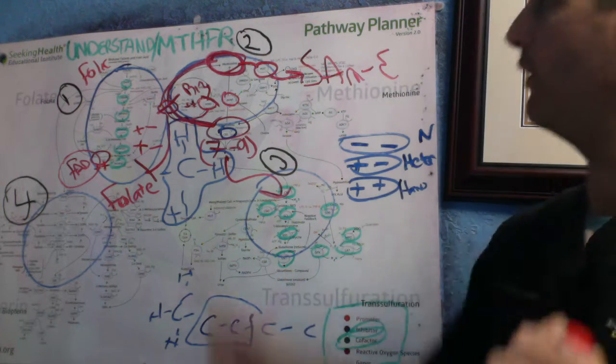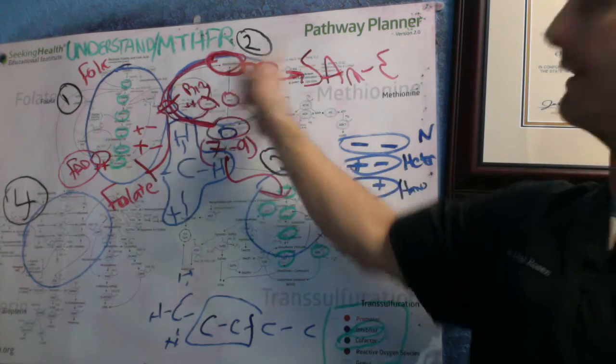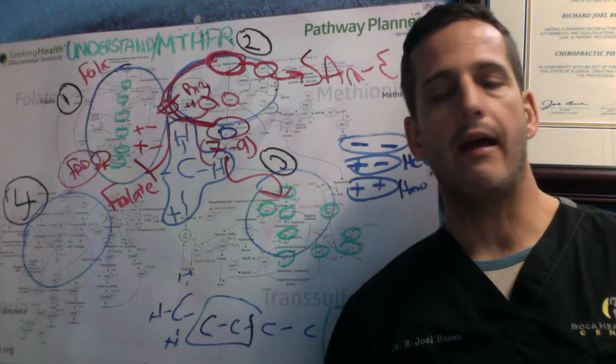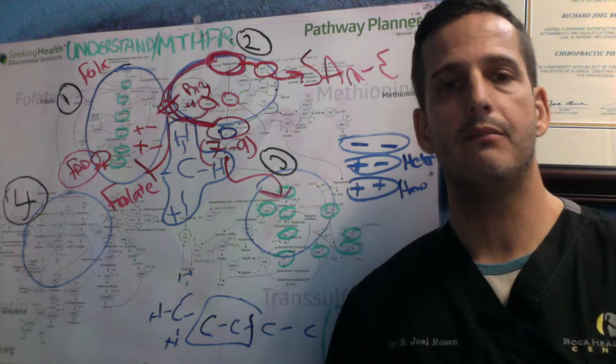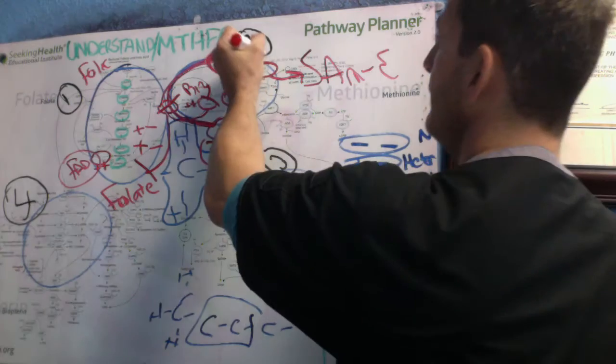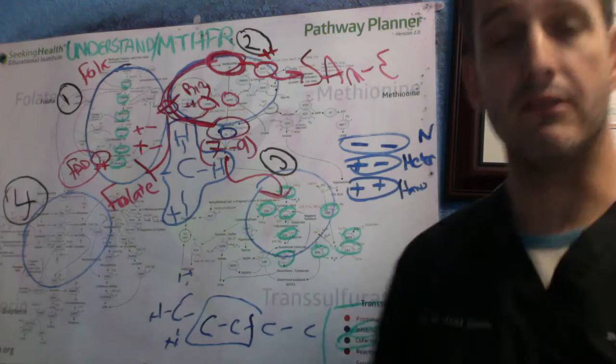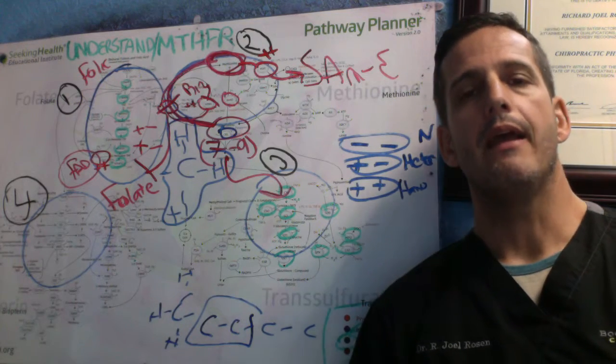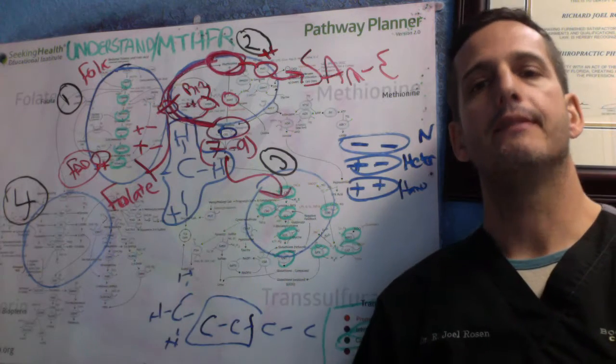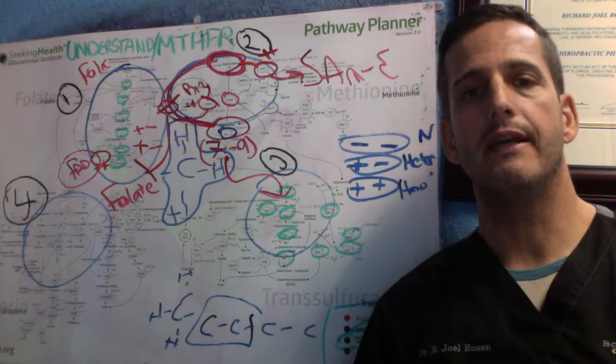And SAMe goes through one last gene from methionine to get to SAMe through the MAT gene. And the MAT gene is, I think, almost equally as important as the MTHFR gene. And no one knows about it. And I see MAT being positive more times than not. And what that means is methionine has a huge problem in order to make SAMe. It has a two-lane highway.